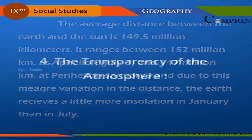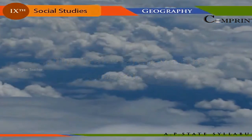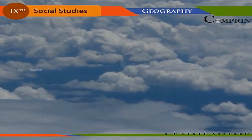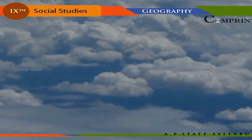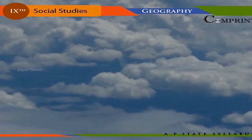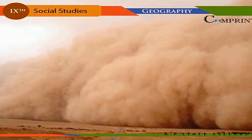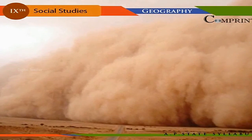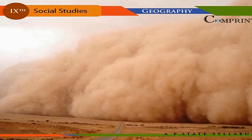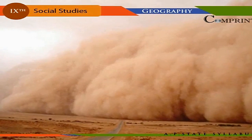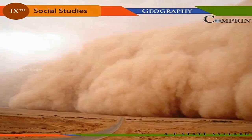The transparency of the atmosphere plays a prominent role in the amount of solar energy received by an area. The amount of cloud cover, dust, water vapor, and certain gases causing air pollution are some of the factors that determine atmospheric transparency. They affect the reflection, absorption, and transmission of solar radiation.